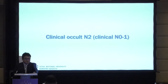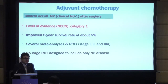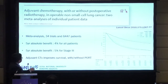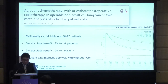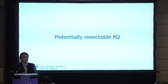For clinically occult N2, this is level category 1 evidence: adjuvant chemotherapy. Usually five-year survival gain is about 5%. A Lancet 2010 meta-analysis of 34 trials among more than 8,000 patients showed a five-year absolute benefit of 4–5%. Radiation therapy is not so beneficial to this population. So for occult N2, we don't have any controversies — most doctors recommend adjuvant chemotherapy.